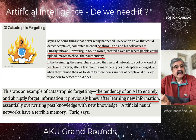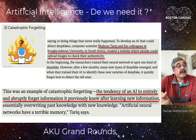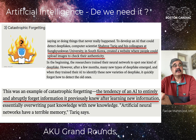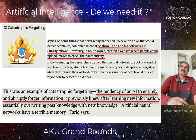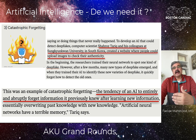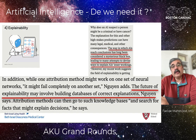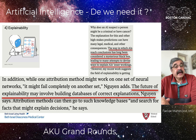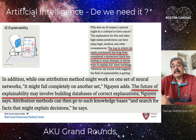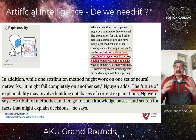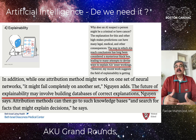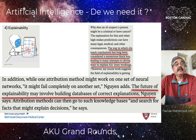Third is catastrophic forgetting: the tendency of AI to entirely and abruptly forget information it previously knew after learning new information. This observed phenomenon has not been solved — why does learning new information lead to erasing all the older information? Fourth is explainability, which is again the black box algorithm. The way AI reaches conclusions has long been considered a mysterious black box. We cannot explain the inner workings of AI, and even building databases of correct explanations would not reveal how specific clinical decisions were actually made.